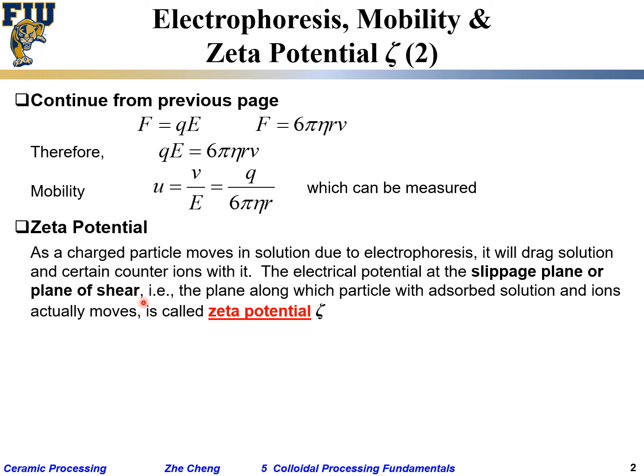The potential at that location is called zeta potential. It's the potential at the plane along which the particle, together with its adsorbed solution molecules and ions, actually moves. It's a complex concept - the particle cannot move by itself because it's charged and will drag some water molecules with it. The potential at that slippage plane is called zeta potential.